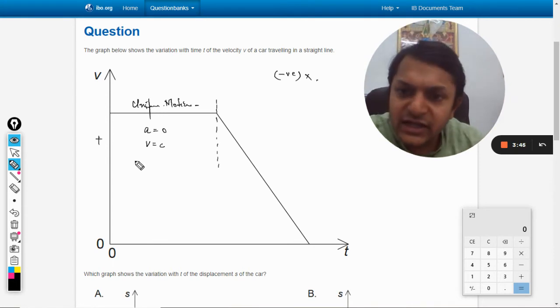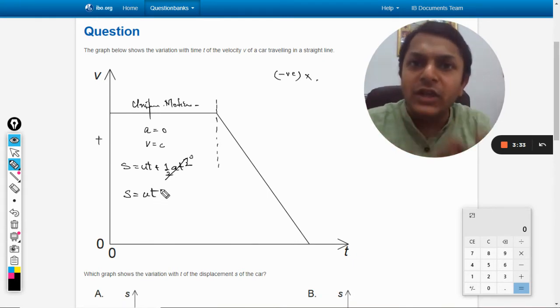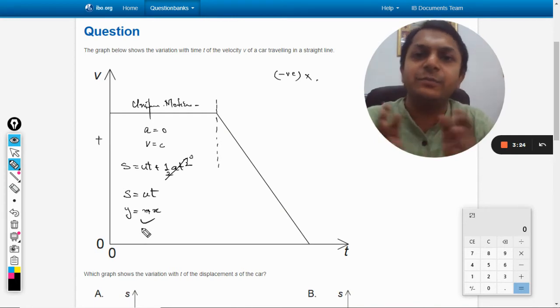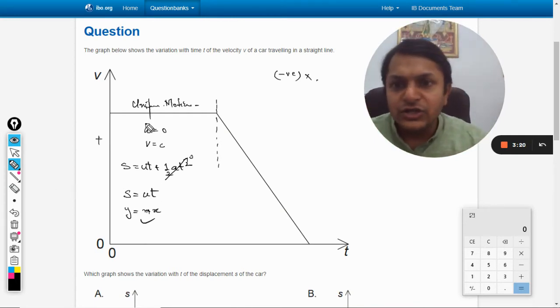Having an angle, so it's like s is equal to ut plus half at squared. As we know, because acceleration is zero, the formula reduces to displacement is equal to velocity multiply by time. That's a very simple formula. So this can be compared with y is equal to mx, so it should be a straight line which is passing through the origin for the students those who are good with maths.